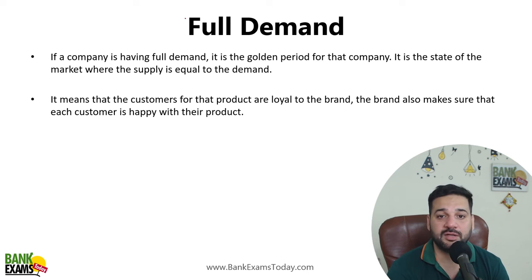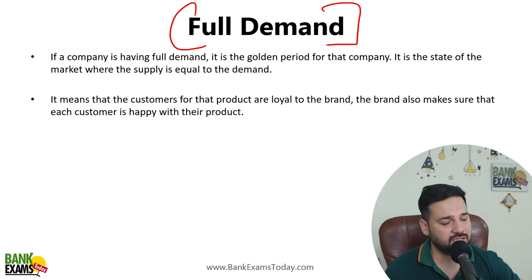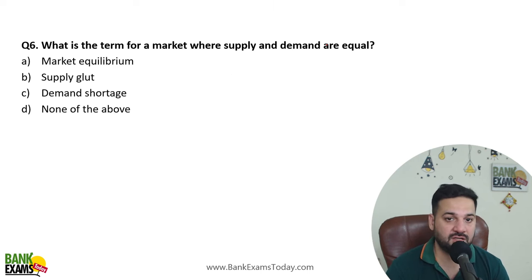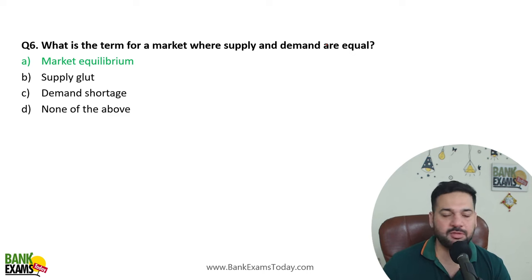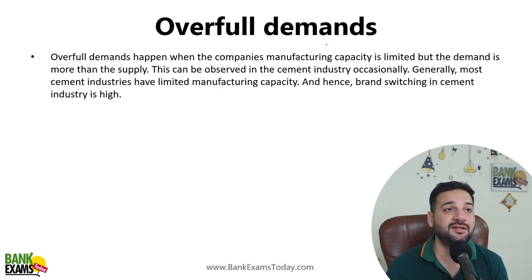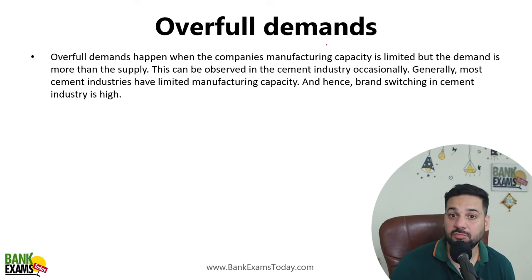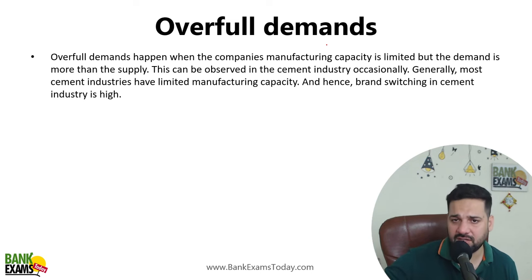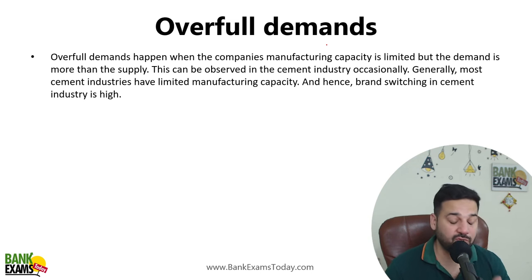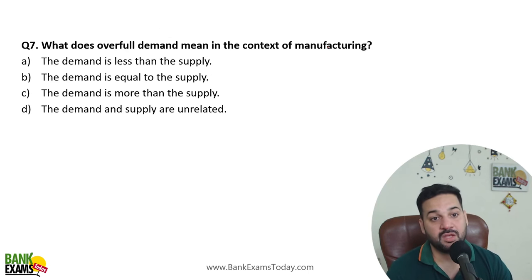Full demand is a golden period where demand is equal to supply — whatever is produced gets sold. The term for a market where demand and supply are equal is market equilibrium, which is the ideal situation for any company. Overfull demand means supply is less and demand is more than supply. This happens in case of cement companies occasionally, because a cement manufacturing plant is huge and in the short run supply is fixed and cannot be increased, so demand can exceed supply.